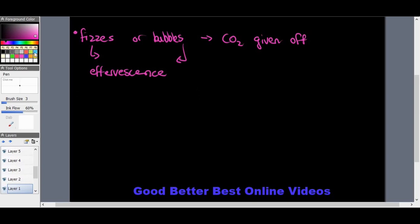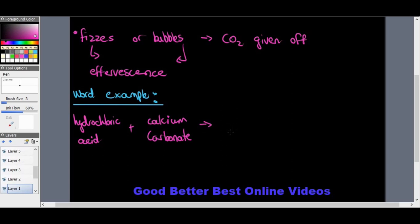So let's look at a word example first, and then we'll put that into a balanced chemical equation. We're going to take again hydrochloric acid, and we're going to react that with calcium carbonate, one of the most common carbonates that we work with. And then what we get is calcium chloride, and of course without any further ado, I'm just not going to write out these words, we'll write CO2 plus H2O.